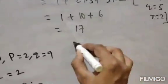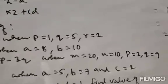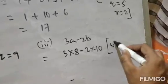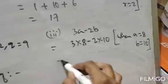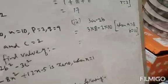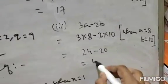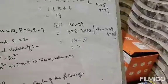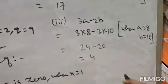Question number 3: the expression is 3a minus 2b. Values given are a=8 and b=10. Substituting: 3×8 minus 2×10 = 24 minus 20 = 4. The answer is 4.